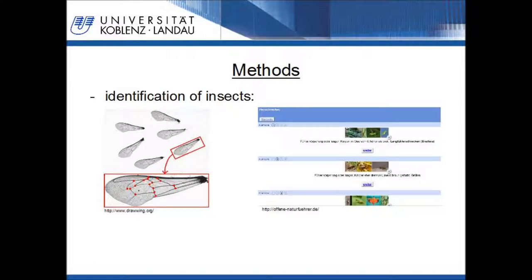One disadvantage of this method is that the insect has to be killed. Another method is to identify the insect with an identification key by hand. On the right side, you can see an example of an identification key released as a software tool. The user has to answer questions about the morphology of the insect. After answering the last question, he gets information about the species.